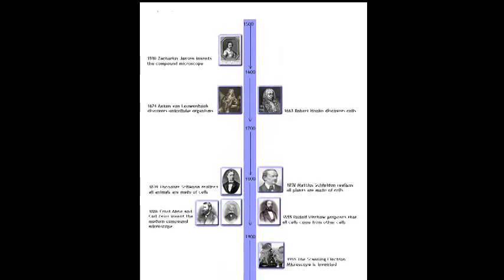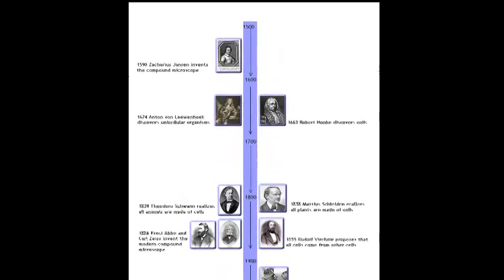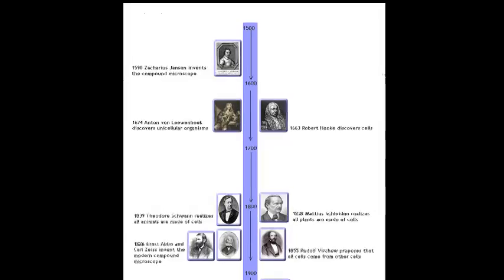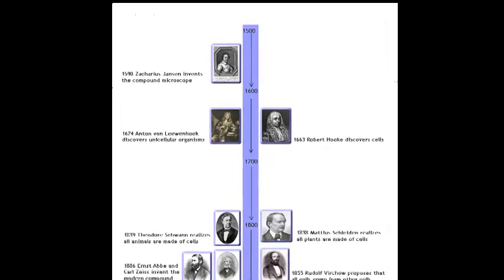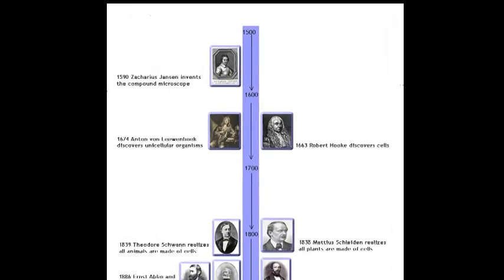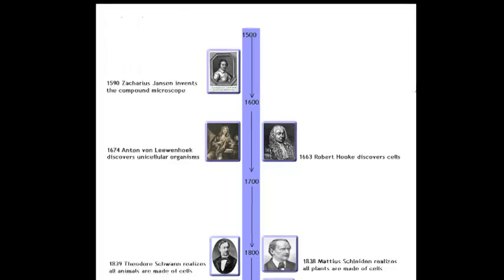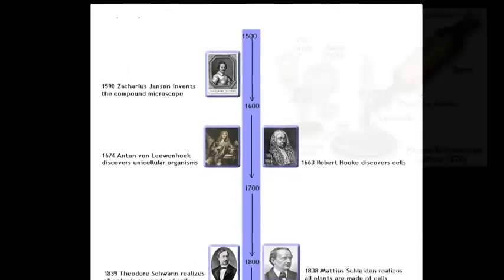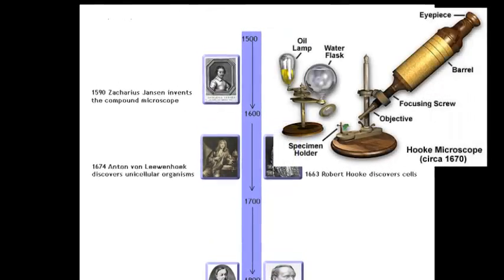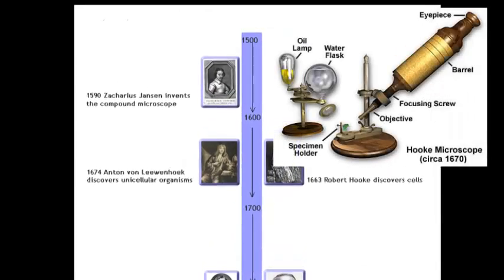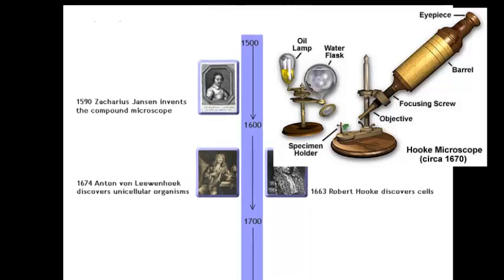It starts with being able to see cells. Janssen, then Leeuwenhoek, and Robert Hooke first developed microscopes and began looking at the microscopic world. Hooke's microscope is like the ones we use today.